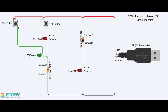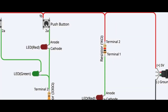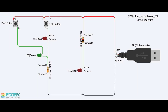But in Tinkercad, the dual LED is not available in the component library, so we took two different colour LEDs — red and green — and connected them like a dual LED. When you press the push button in path 2, electric current flows from the positive 5V terminal of the USB, through the push button, then through the red terminal of the dual LED, then to the 330 ohm resistor to ground, completing path 2 and emitting red light.